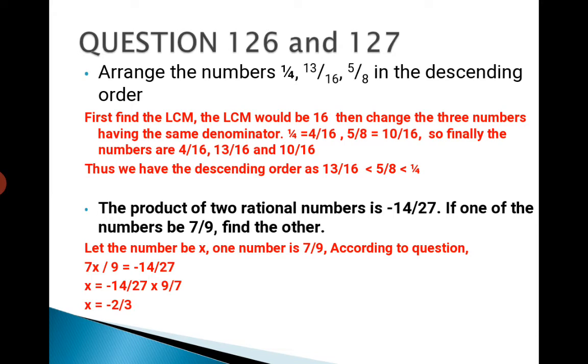Question 127: The product of two rational numbers is -14/27. If one of the numbers be 7/9, find the other. Let the number be x. Therefore, we don't know the second number, right? But we know the product. So if we divide the product by the first number, we will get our answer. So 7x/9 is equal to -14/27.